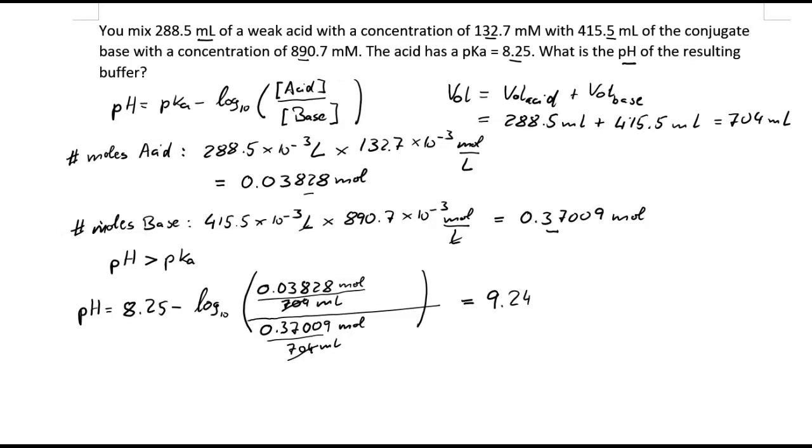Again we can do the quick reality check. We said that the pH must be larger than the pKa because we have a higher number of moles, a higher concentration of the base than the acid, which makes the pH higher than the pKa. Our pKa was 8.25, and 9.24 definitely is higher. So I hope this makes sense, and thank you very much for watching.